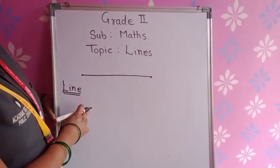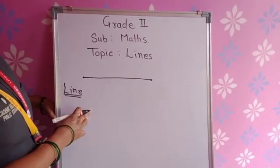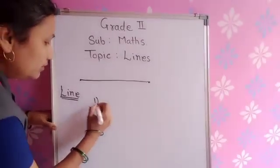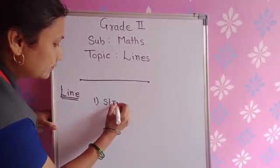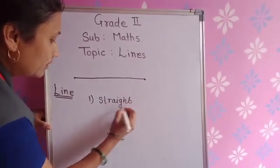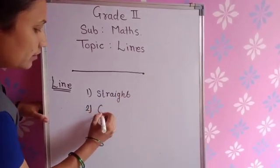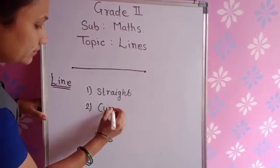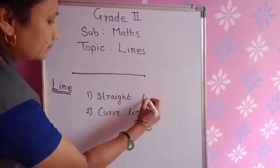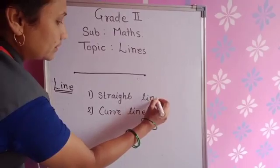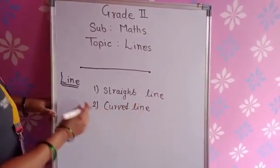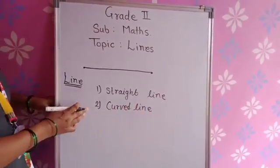How many types? There are two types. One is straight line and another is curved line. Straight line and curved line — these are the two types of lines.